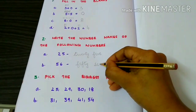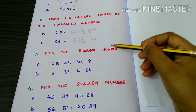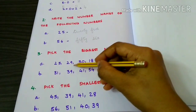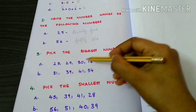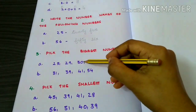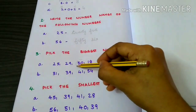Pick the biggest number. 25, 29, 30. 30 is the biggest number.